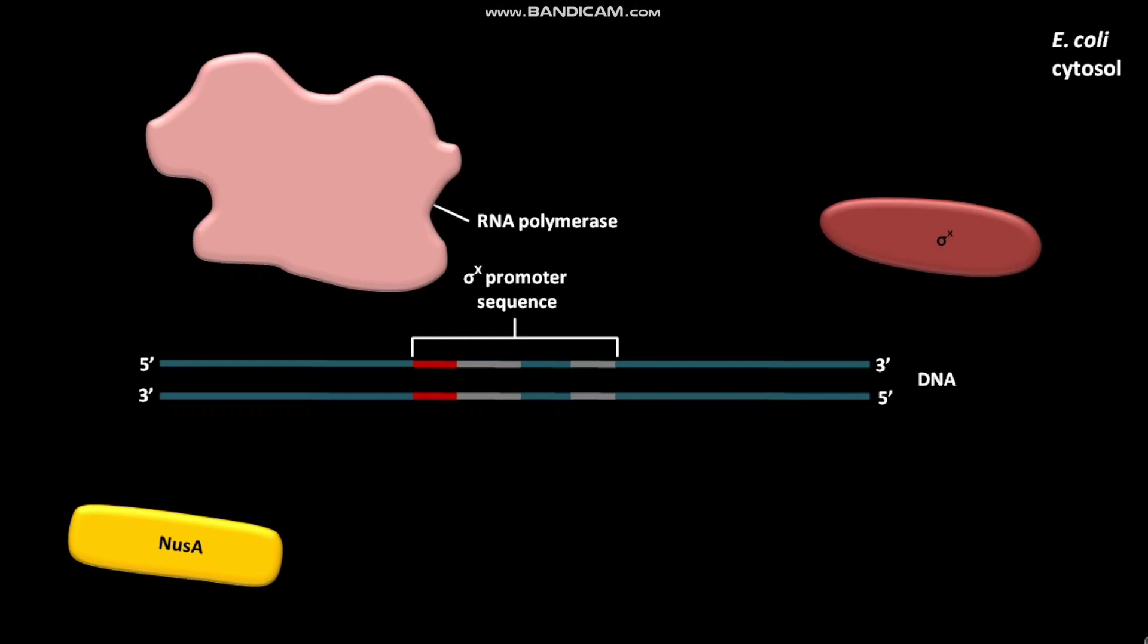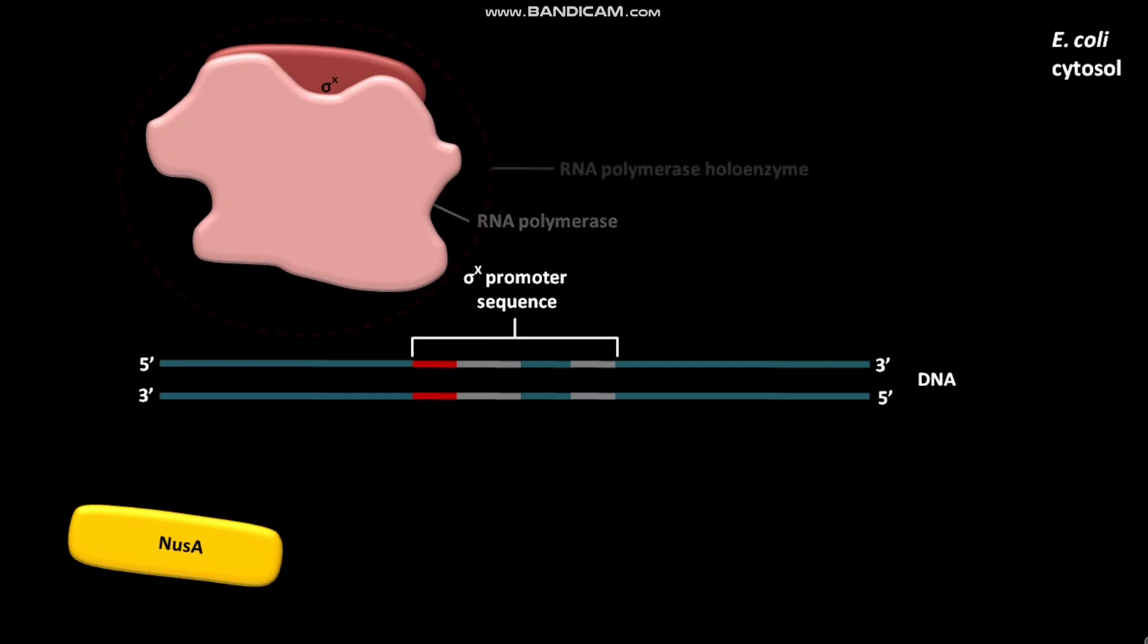During the σ cycle, a σx subunit binds to RNA polymerase. This binding produces an RNA polymerase holoenzyme. This RNA polymerase holoenzyme has a core and a bound σ subunit.